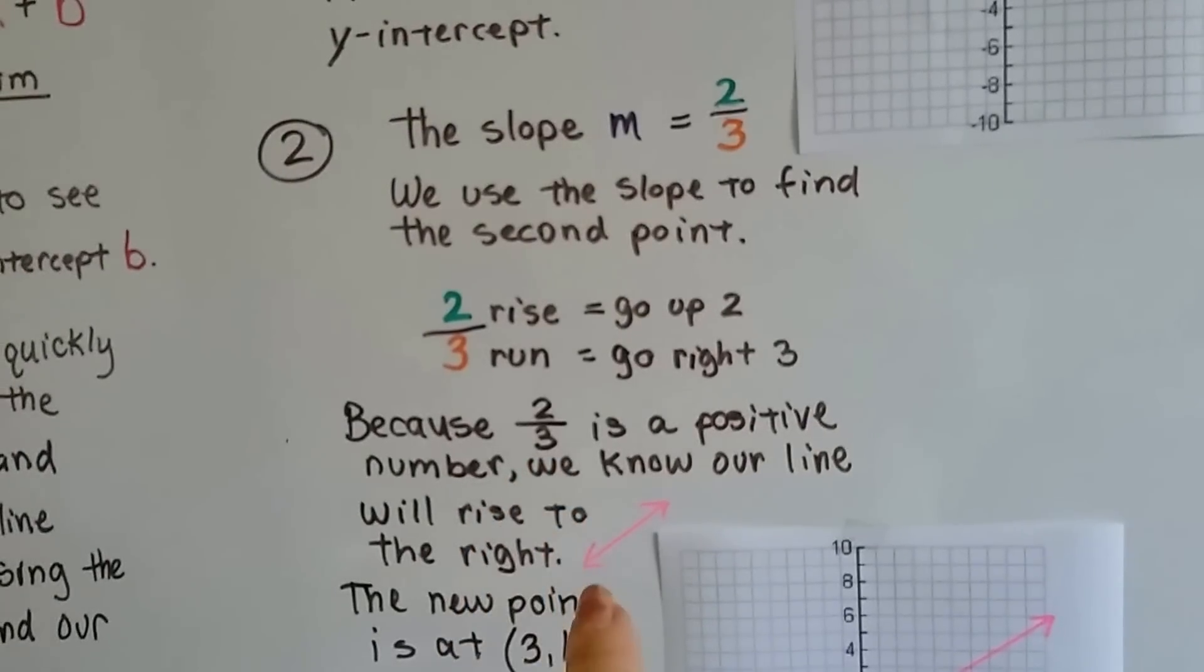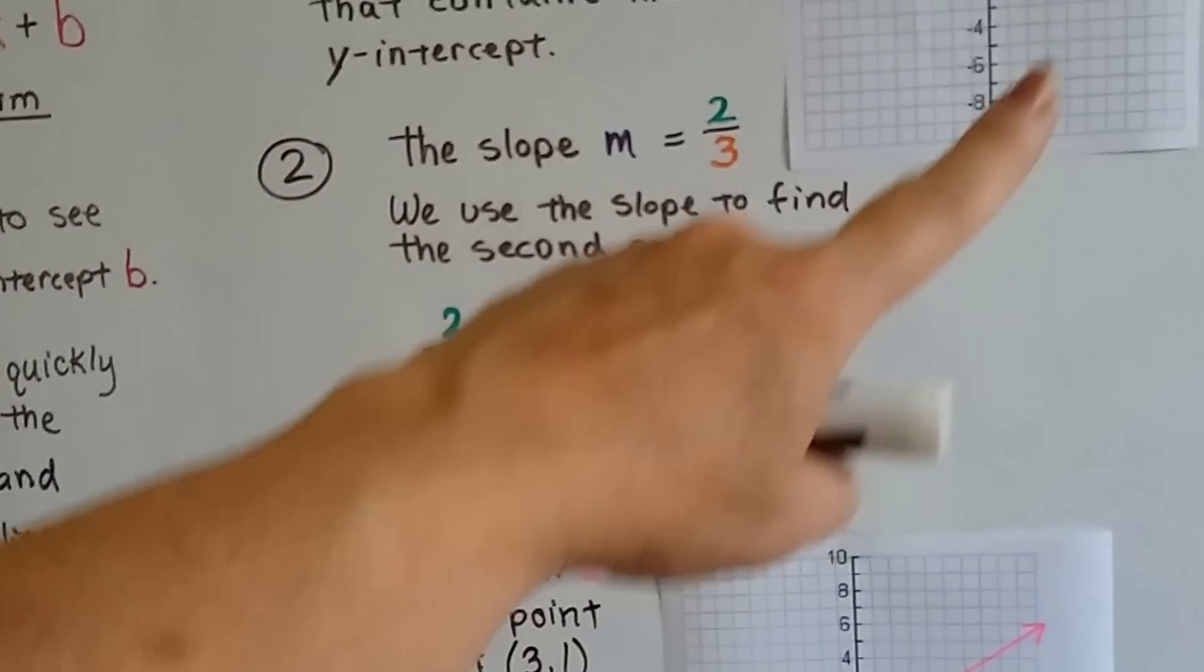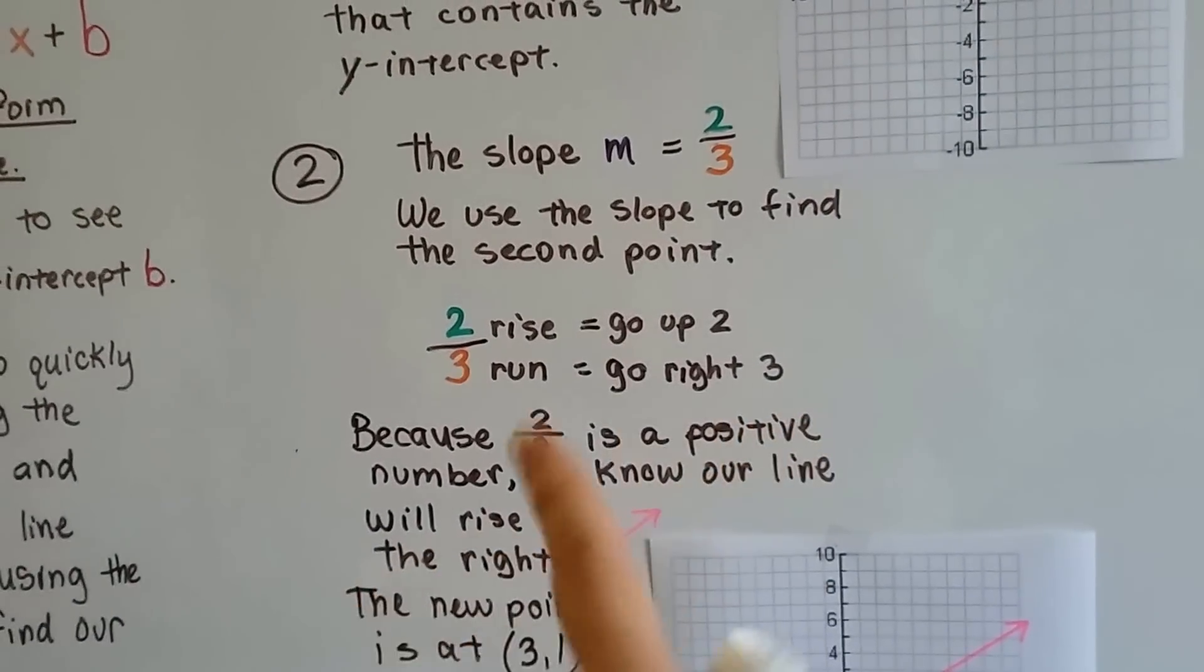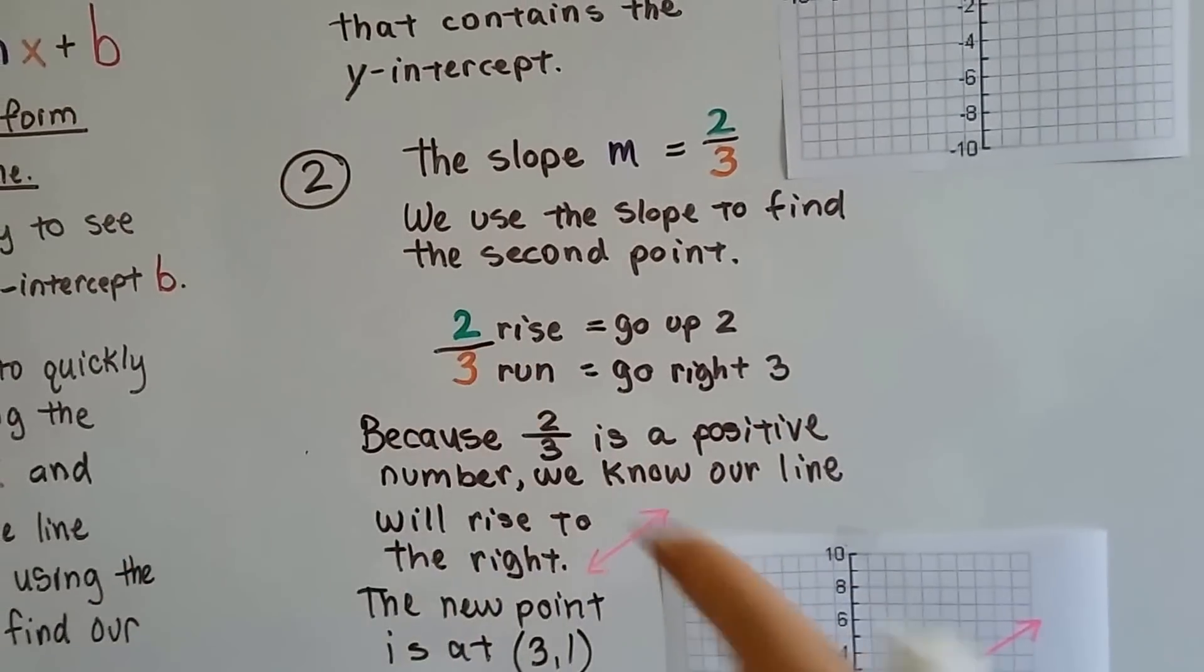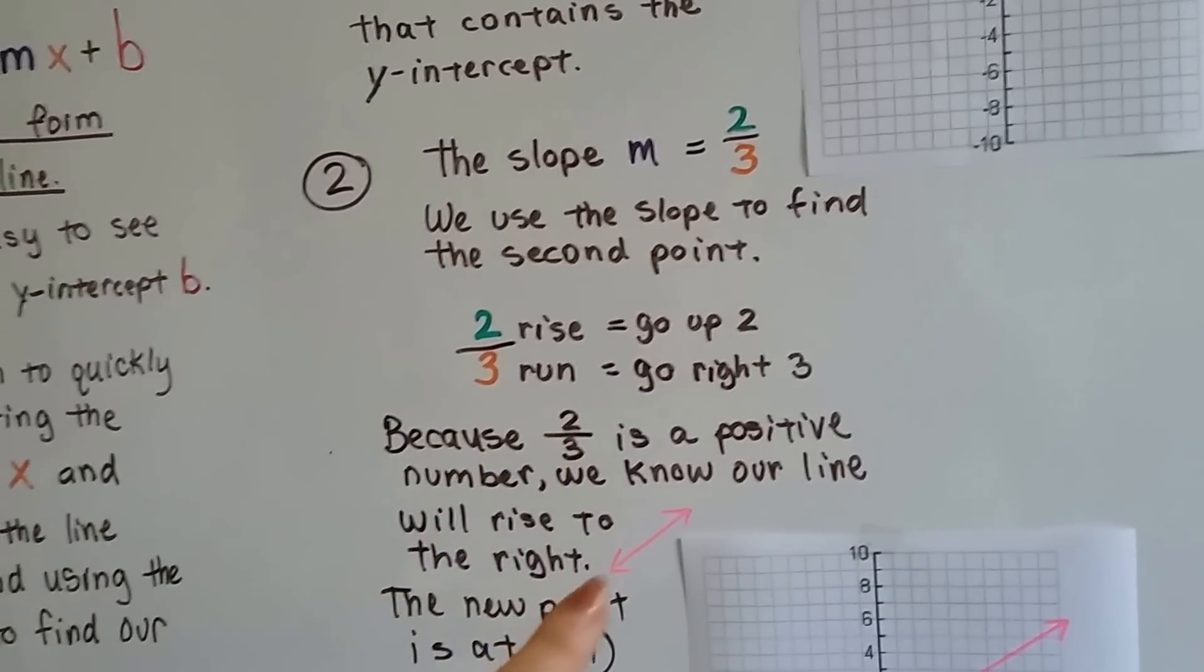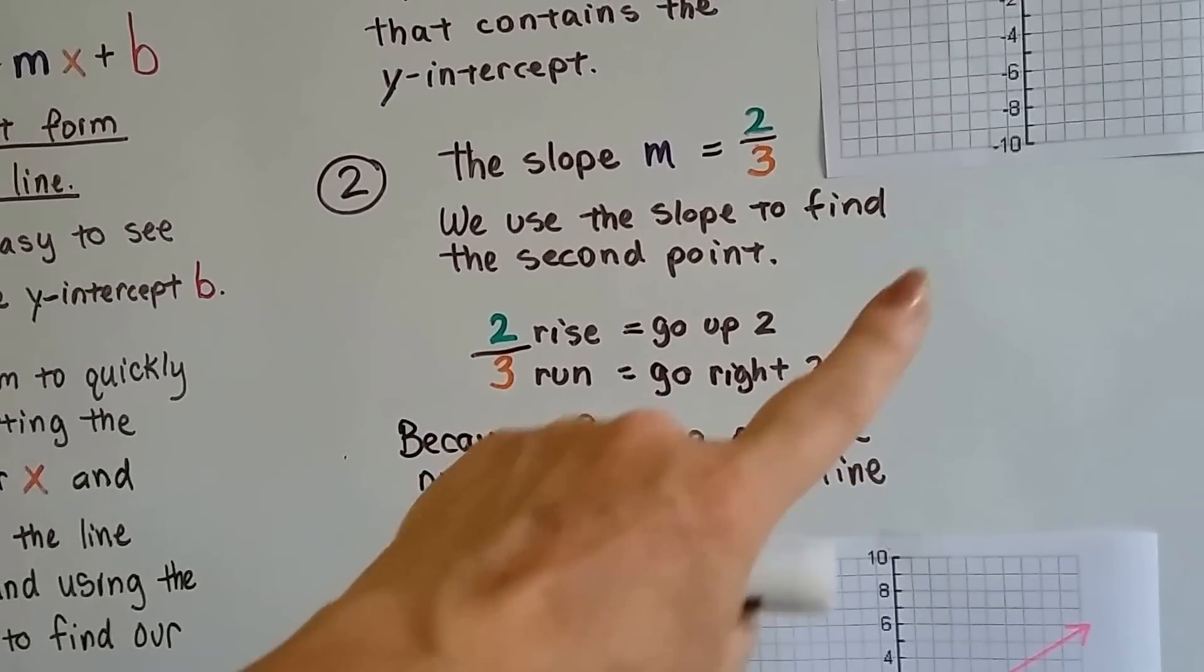Now, because the 2 thirds is a positive number, we know our line is going to rise to the right. It's going to go up in this direction. It's positive. If it were negative, it would go this way. So because this 2 thirds is a positive number, we already know the direction that our line is going to go. It's going to go this way.